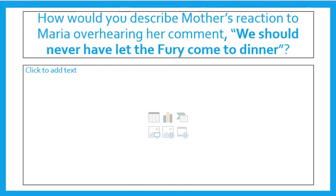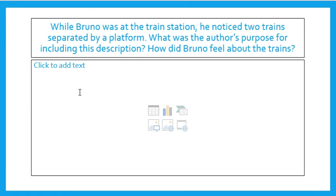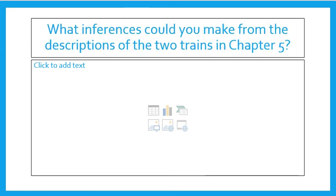Slide 7 says: While Bruno was at the train station, he noticed two trains separated by a platform. What was the author's purpose for including this description? How did Bruno feel about the trains? This is where Bruno sees that both trains are going the same direction, and there are all sorts of people crowding into the other train, and he doesn't understand because on his train there's lots of space. Knowing what you know about how the Germans transported their prisoners, what do you think the purpose for including this scene was? The other people on the train next to Bruno's train were probably going to a concentration camp.